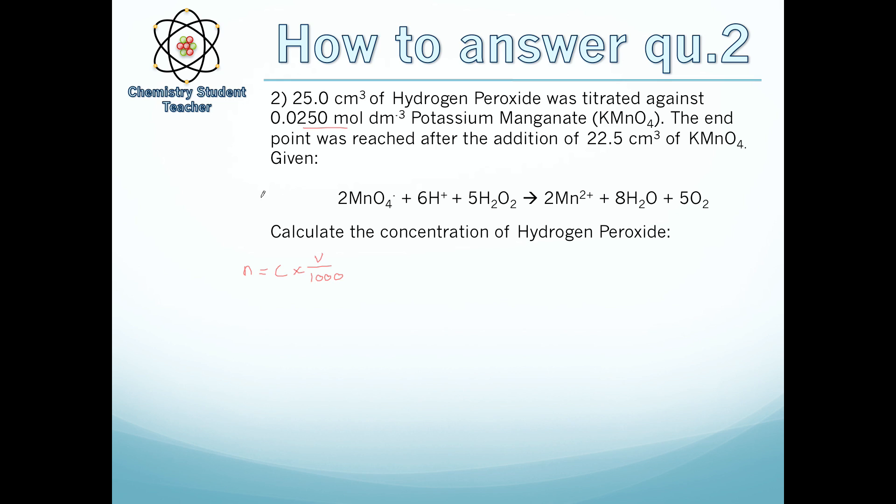We know the concentration of the manganate and the volume of the manganate. However, we only know the volume of the peroxide, so we can't work anything out for the peroxide as we have two unknowns. With the manganate we have one unknown so we can work that out. We put the concentration in: 0.0250 mol dm⁻³, then times by the volume, 22.5 over 1000. When we put that in the calculator we get 5.625 × 10⁻⁴ moles.